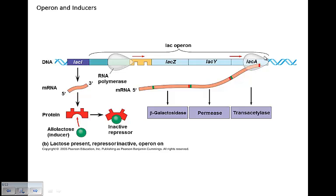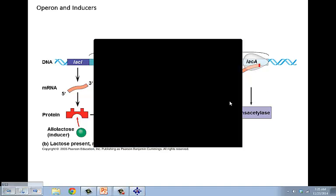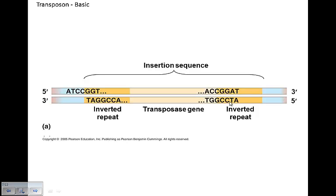Now we move into DNA control mechanisms that are in all cells — both prokaryotes and eukaryotes. These are ways to control gene expression. Transposons, called jumping genes, are DNA segments that act as blockers to transcription — they actually block the transcription process. Barbara McClintock discovered this control mechanism back in the 1940s working with maize corn, and she won the Nobel Prize for it.